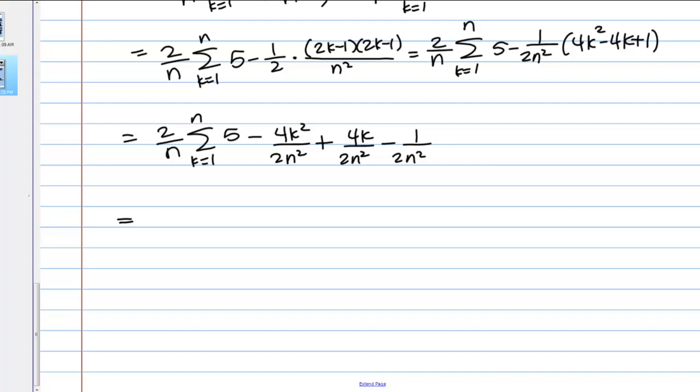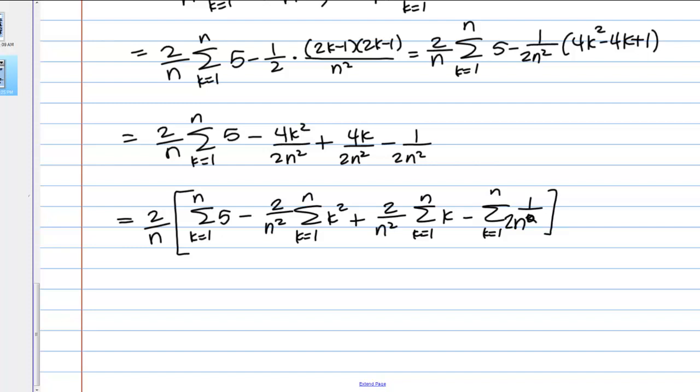So, I can split this up, just like I did before, and then use my sum formulas. Okay, so, 2 over N's out front of everything. I have the sum from k equals 1 to N of 5 minus, I'm going to pull my constants out front. So, 4 over 2N squared, which is the same as 2 over N squared. Sum of k squared plus 2 over N squared sum of k minus the sum of 1 over N squared. Sorry, 1 over 2N squared.